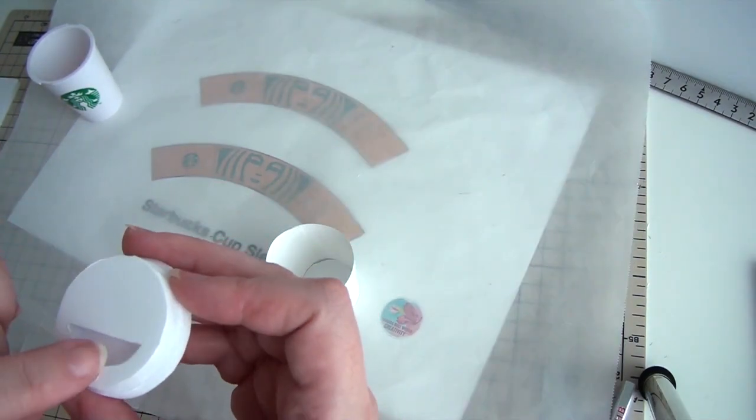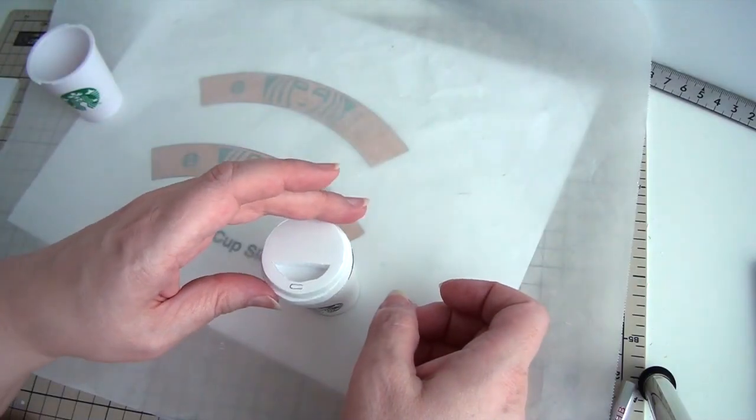Cut out the drinking opening from the printable and glue it on. Your cup is finished now.